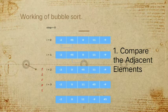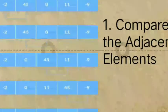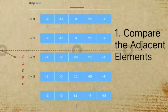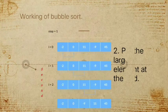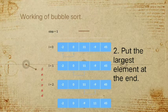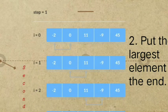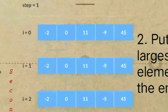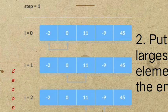After each iteration, the largest element among the unsorted elements is placed at the end. In our second step, we put the largest element at the end by comparing from index 0 to 1. Our index 0 value is negative 2 and index 1 is 0, and since negative 2 is not greater than 0, we proceed to the next element.